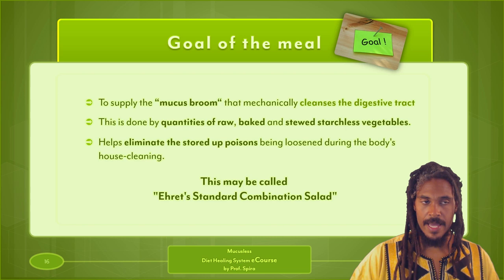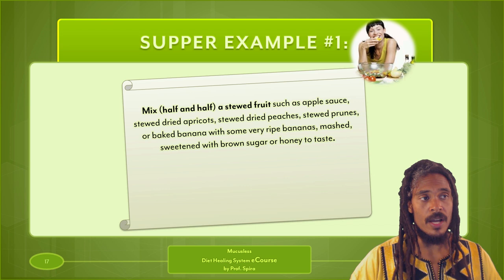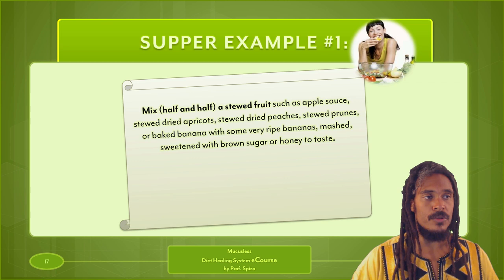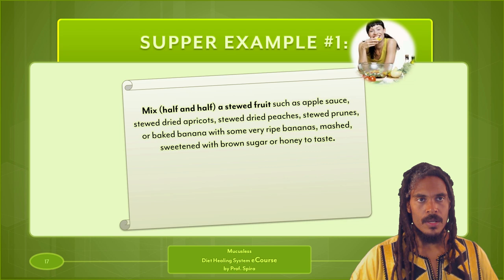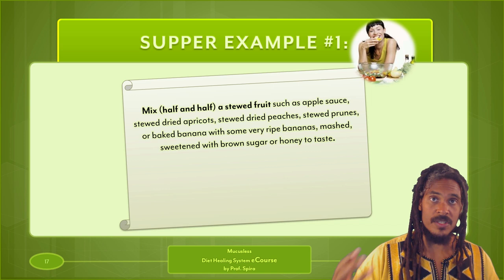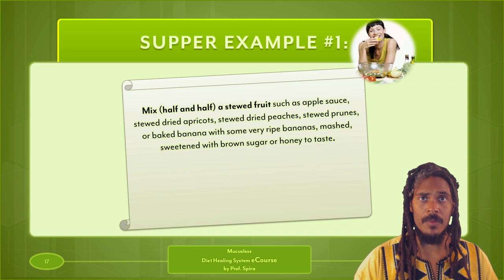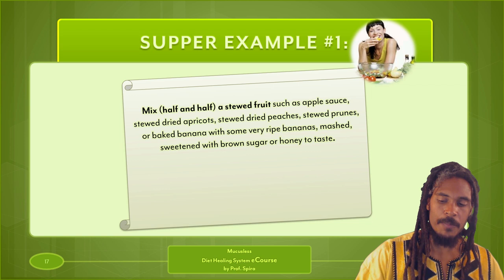For supper in the first two weeks, the example is: mix half and half a stewed fruit — such as applesauce, stewed dried apricots, stewed dried peaches, stewed prunes, or baked banana — with some very ripe bananas, mashed and sweetened with brown sugar or honey to taste. So lunch is a hearty combination salad with vegetables, and supper is stewed fruit. Many people miss out on the power of stewed fruit.